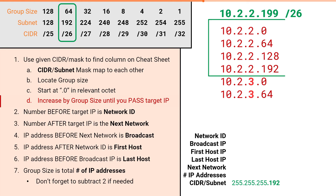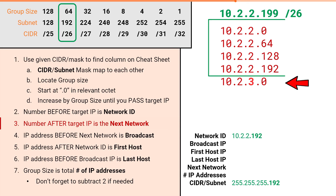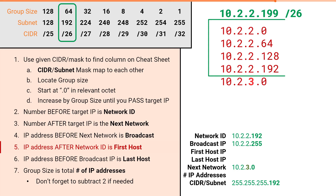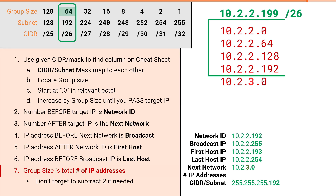Once we've passed our target IP, the process continues as normal. The number before our target IP is our network ID: 10.2.2.192. The number after our target IP is our next network: 10.2.3.0. The IP right before that is 10.2.2.255, which is our broadcast IP. Our first host IP is 10.2.2.193, our last host IP is 10.2.2.254, and our group size of 64 gives us a total of 64 IP addresses in a slash 26.